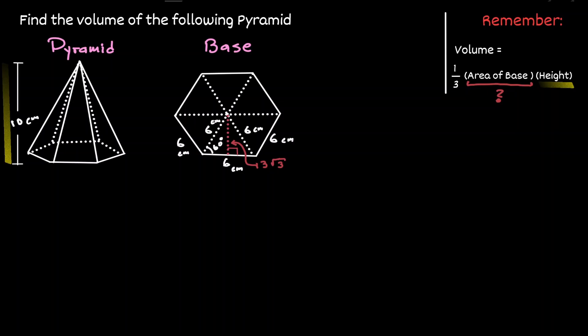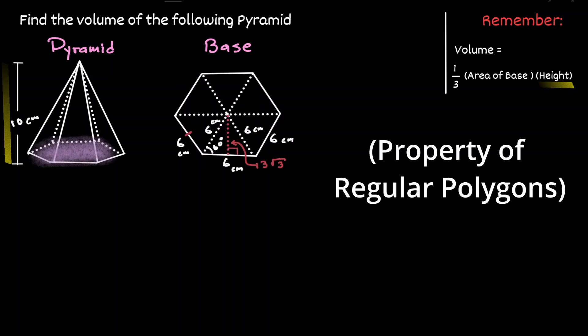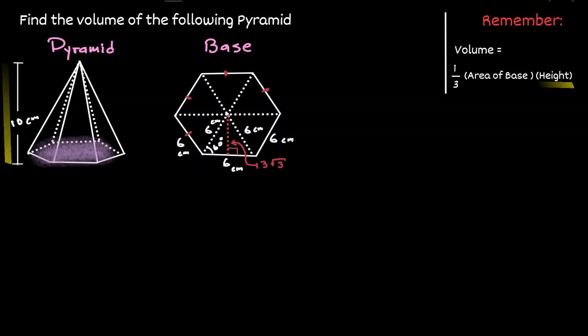If we concentrate on the base of this pyramid, it is a regular polygon where all sides are congruent to each other. So to find the area of the base, we need to think about how we can find the area of a regular polygon. In the past we have said that the area of a regular polygon is equivalent to one half times the perimeter times the apothem.